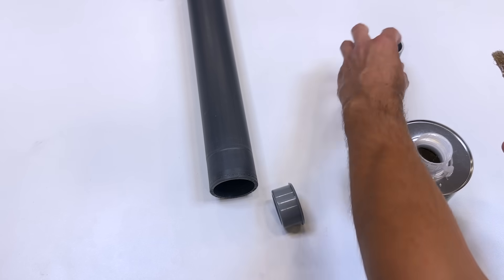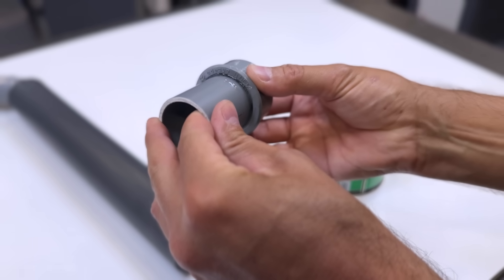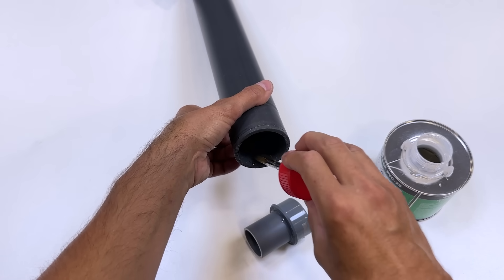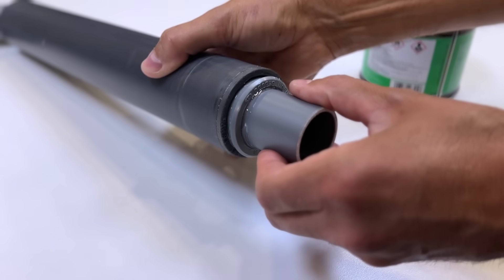Now we join the small 40 millimeter diameter pipe with this PVC reduction and assemble it to the bottom of the main pipe.